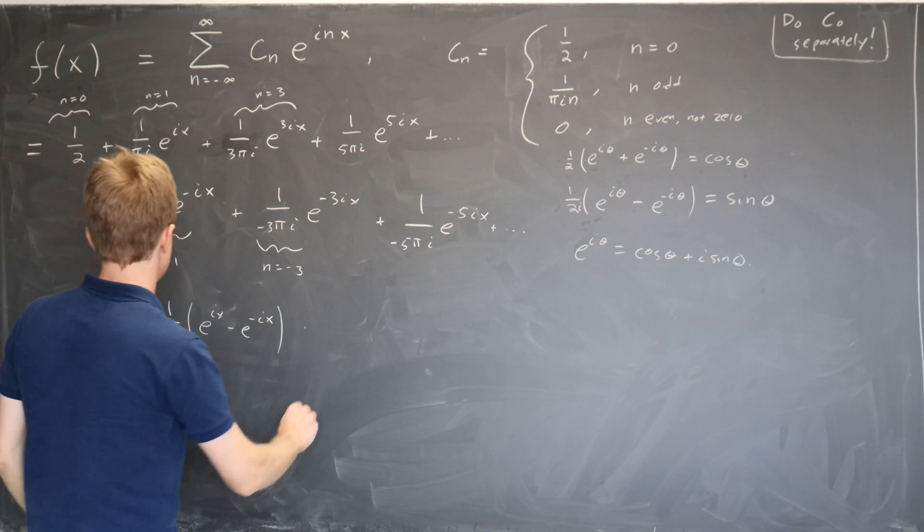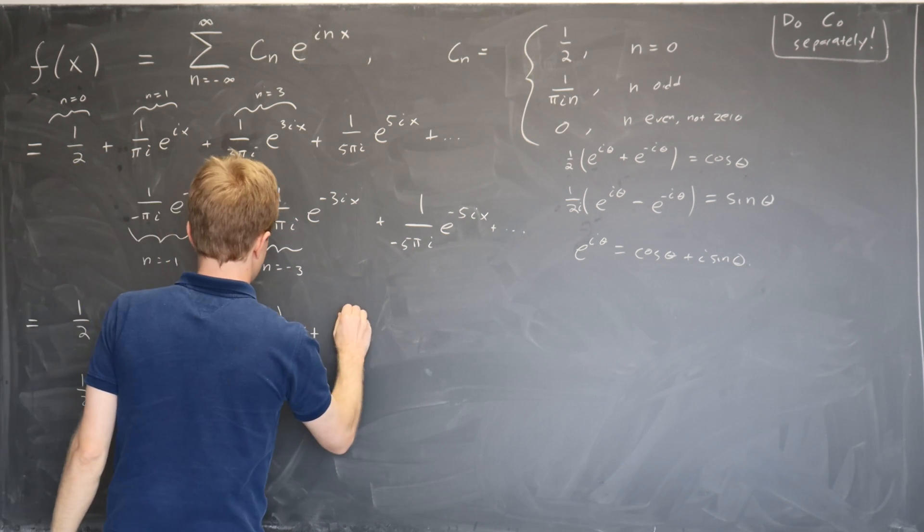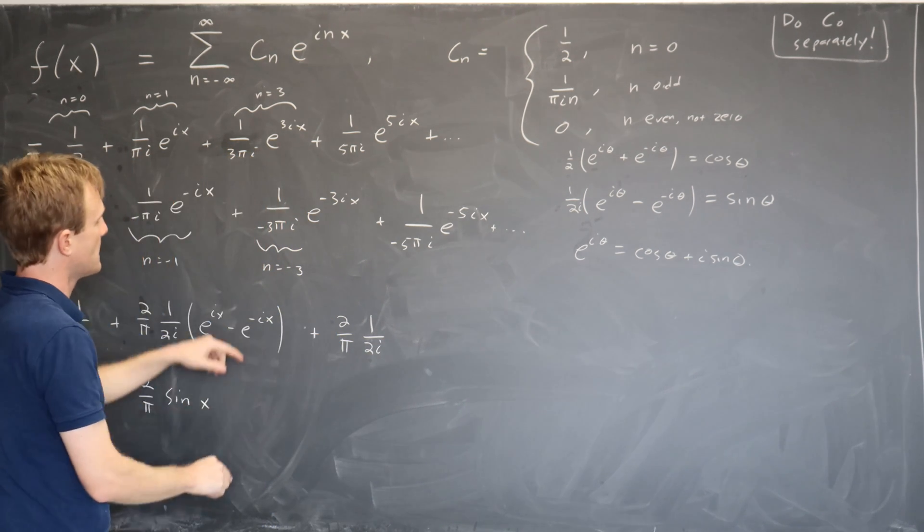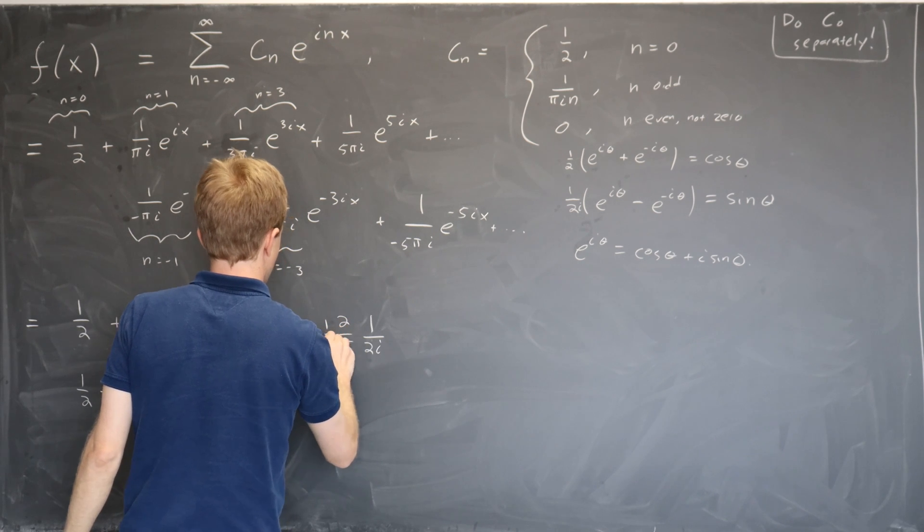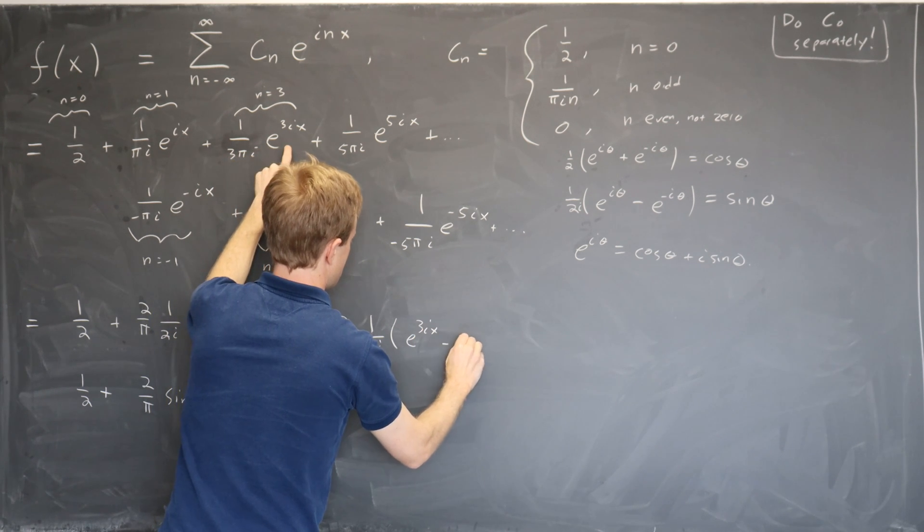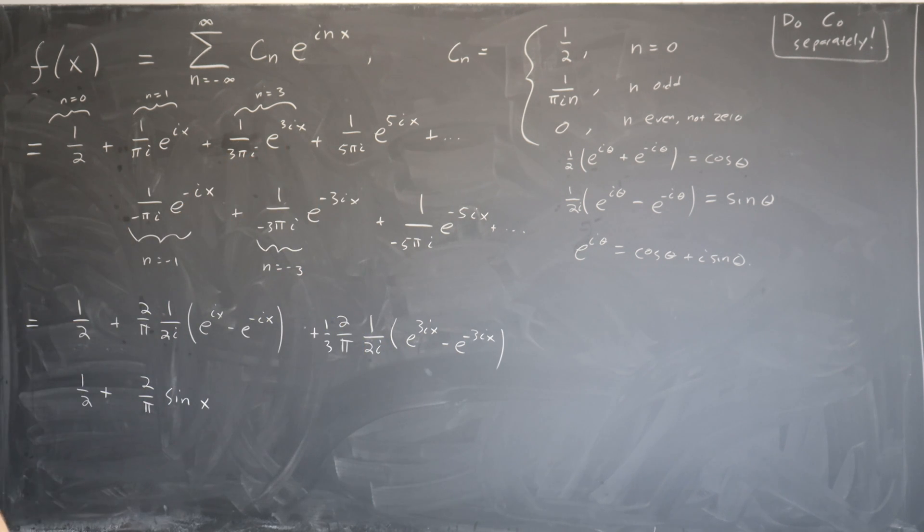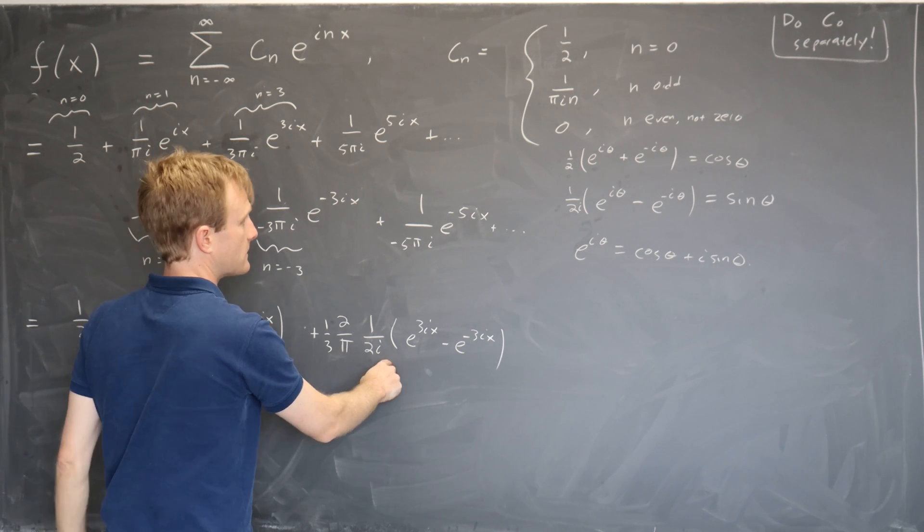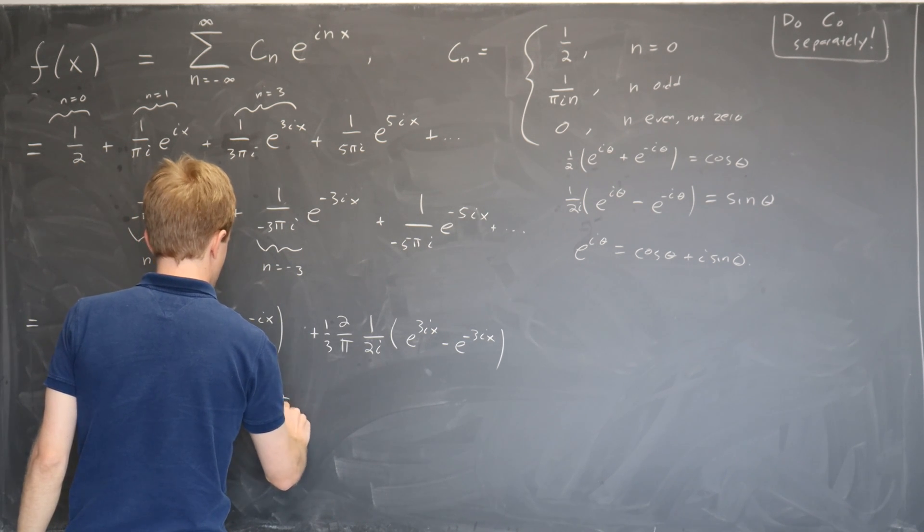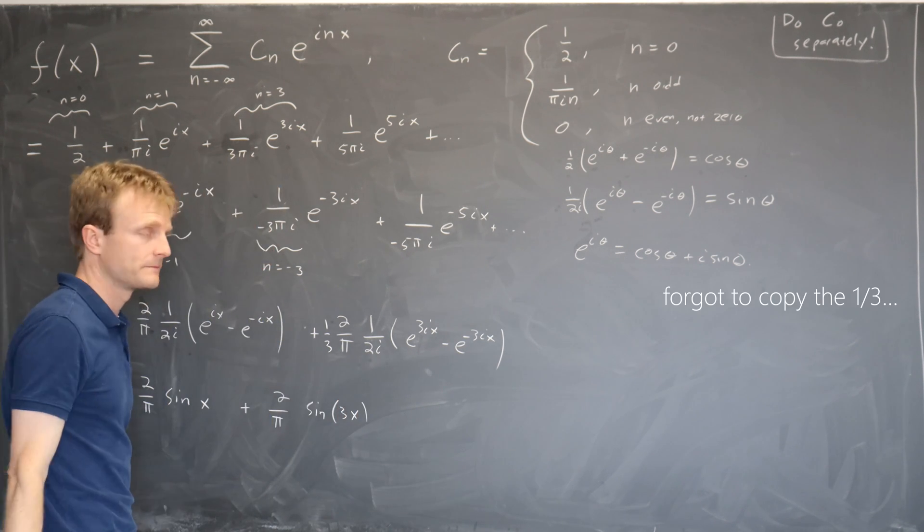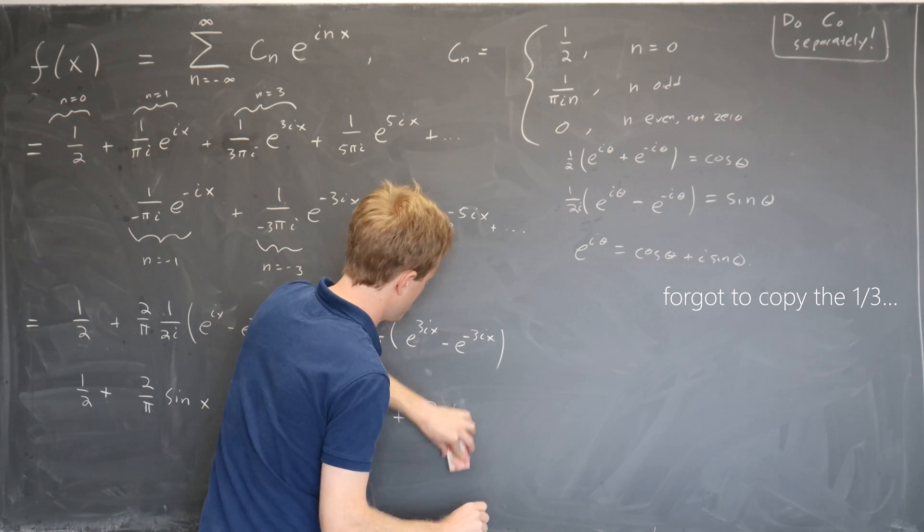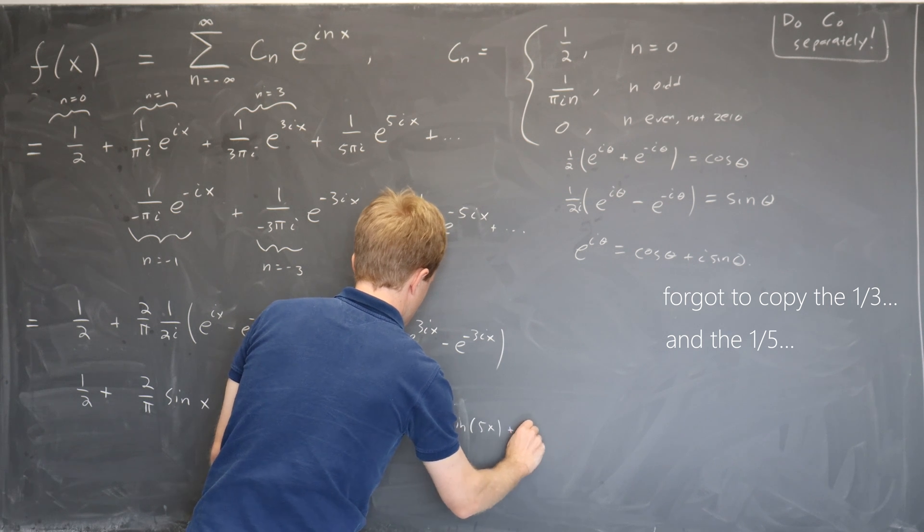Okay, so that came from the n equals 1 terms. Well now we do the same thing with n equals 3, and it's going to be exactly the same prefactor: 2 over pi, 1 over 2i to cancel the 2s. And now what we have here is an extra 1 third e to the 3ix minus e to the minus 3ix from these two terms. So again we recognize this thing as sine theta where theta is now 3x, and so we in fact have 2 over pi sine 3x. And so on, the 5x terms are going to be exactly the same: 2 over pi sine 5x, etc.